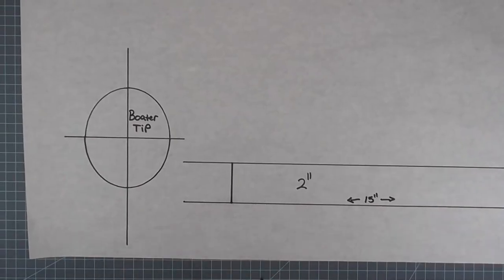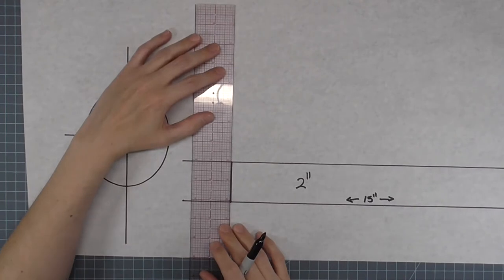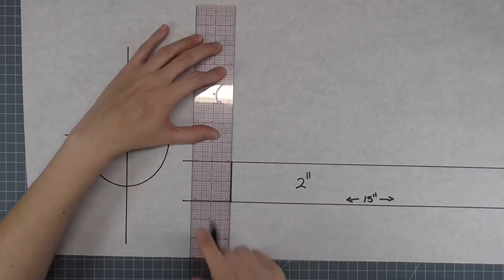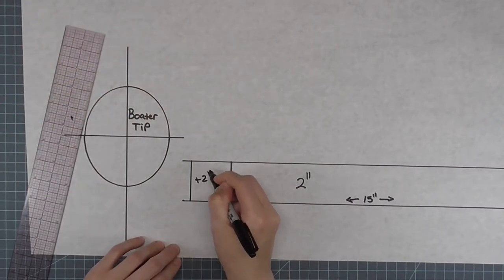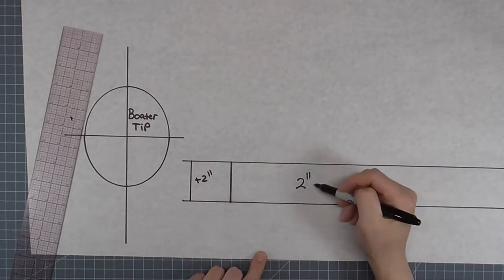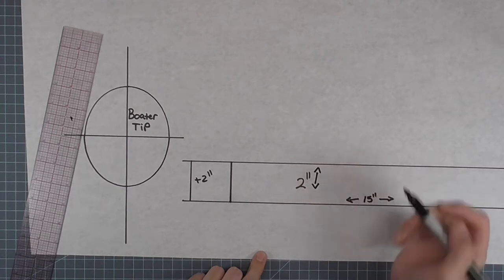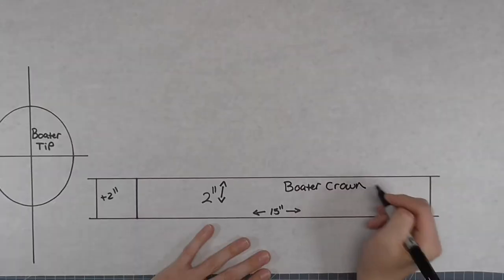On one end from the termination line, measure out two inches. This is a sort of seam allowance that we can use to overlap the ends when constructing the boater. Label this piece Boater Crown.